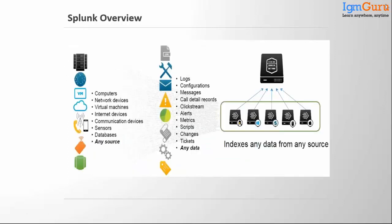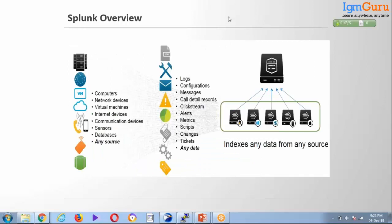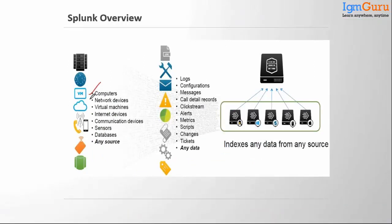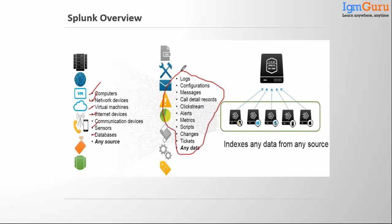Next, let's look at the sources from which we can pull data into Splunk — computers, network devices, virtual machines, internet devices, sensors, and databases. The data type is not constant — you can pull any log files, messages, configurations, alerts, scripts, or CSV files, and do analysis on top of that.